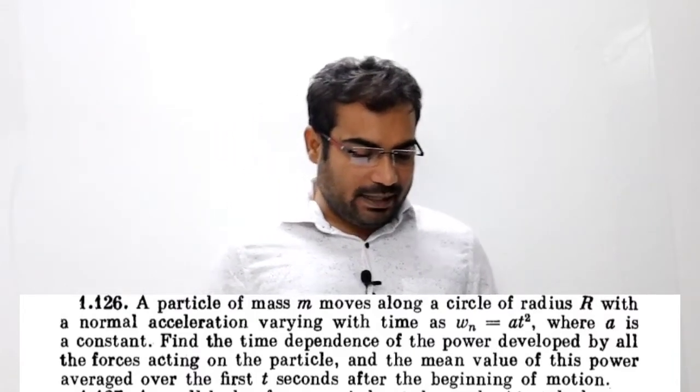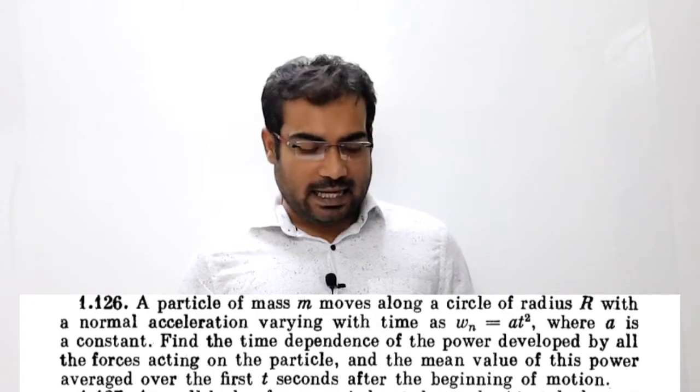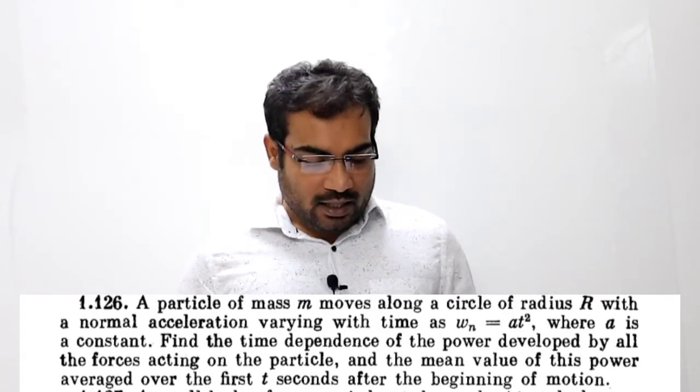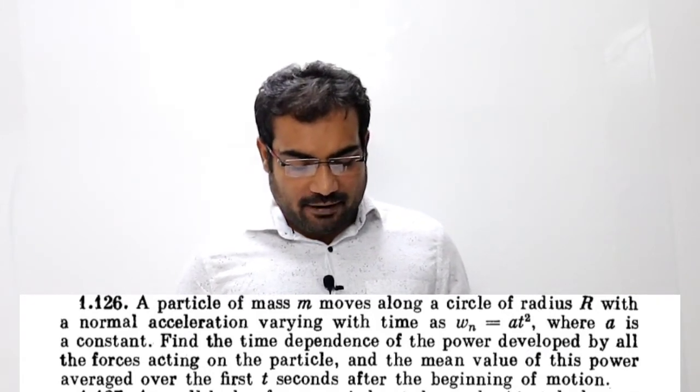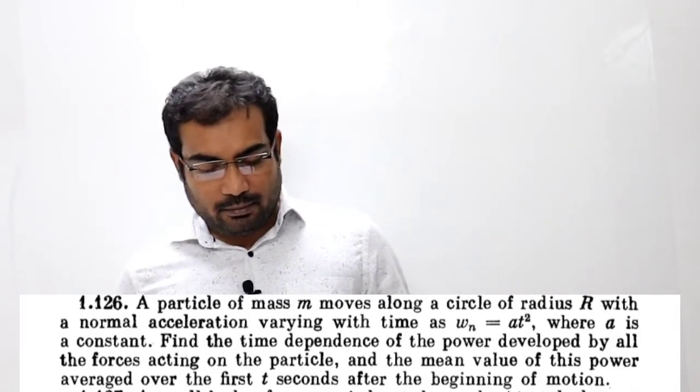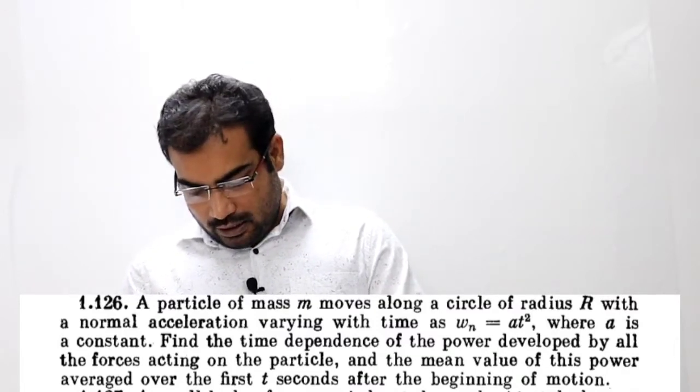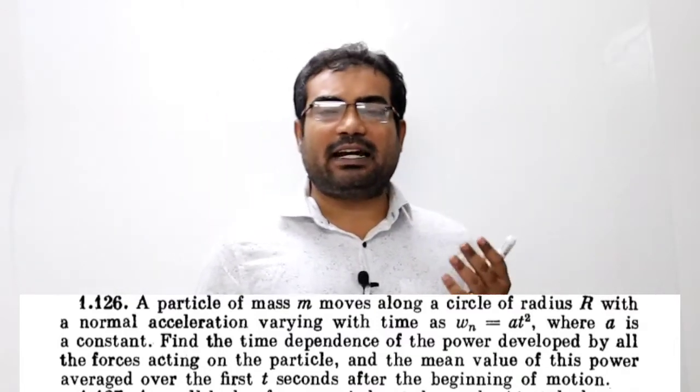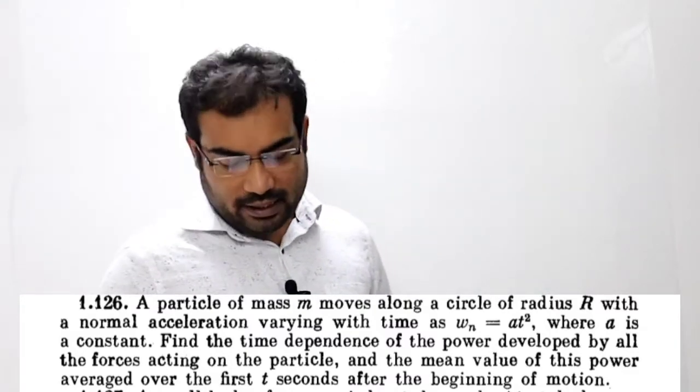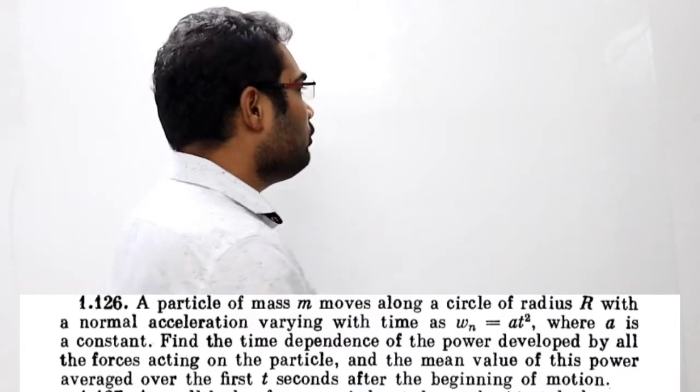Find the time dependence of the power developed by all the forces acting on the particle, and the mean value of this power averaged over the first T seconds after the beginning of motion. Thik hai, so this question me normal acceleration, it means centripetal acceleration ka equation diya hua hai A T squared. Normal acceleration centripetal acceleration hota hai.